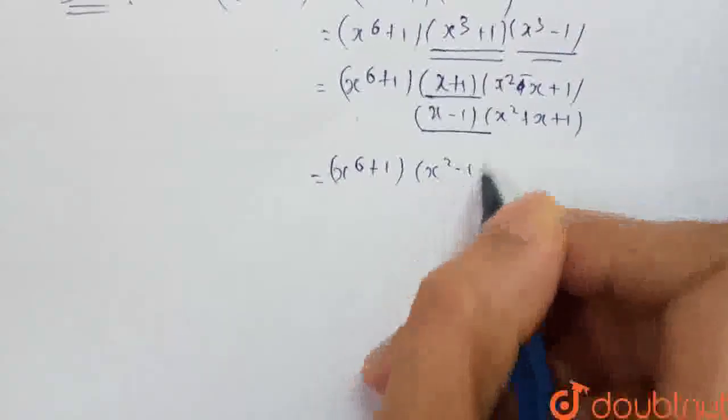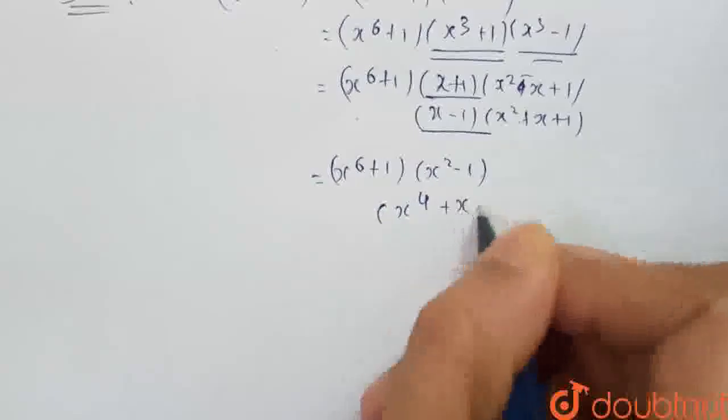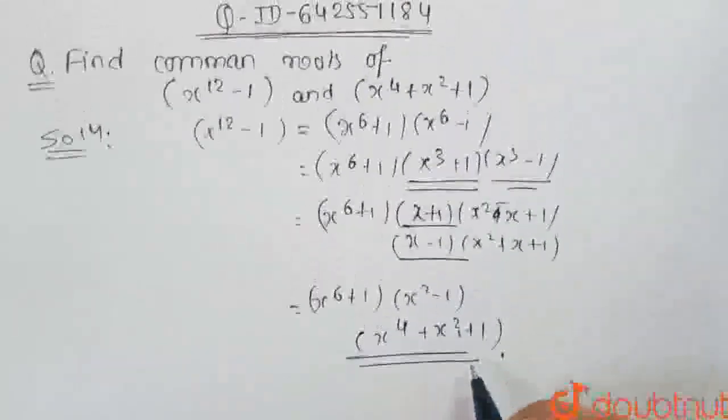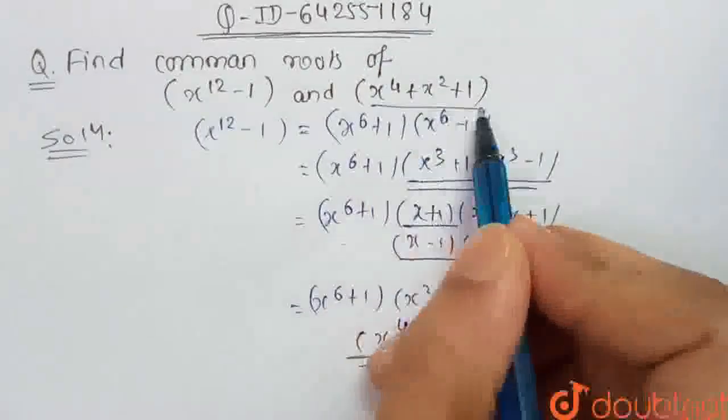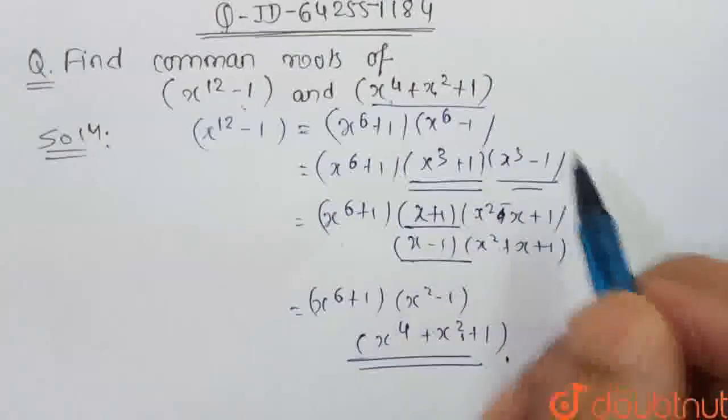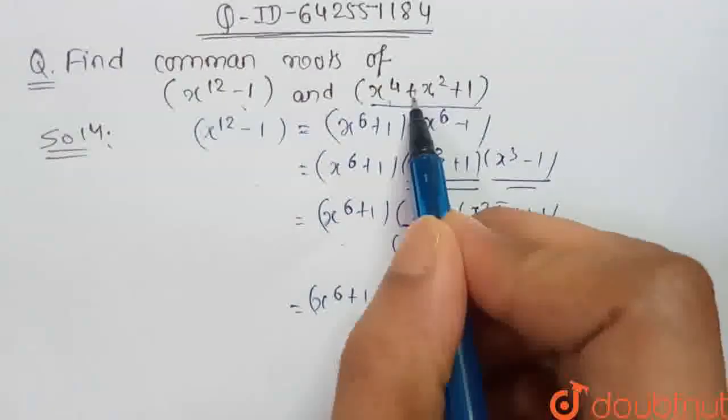It will be x^2 - 1, and this term will be x^4 + x^2 + 1. And this is the similarity between this and which is given in the question. So these two will have common roots regarding this equation. So the solution of this equation will be the common roots.